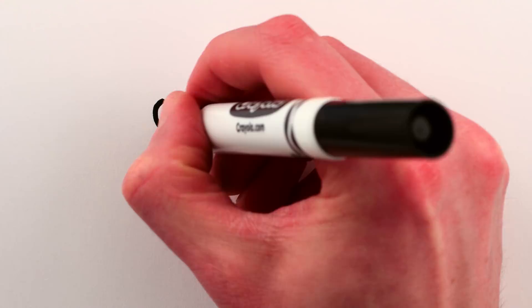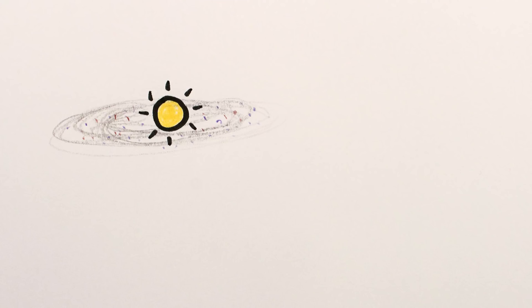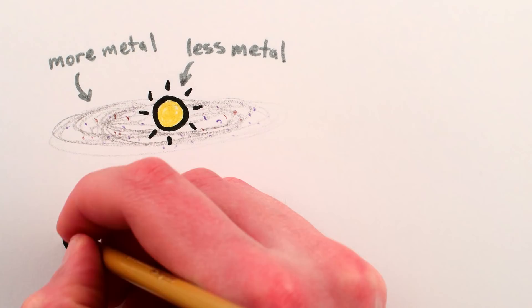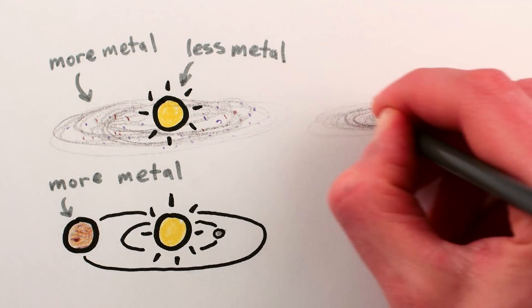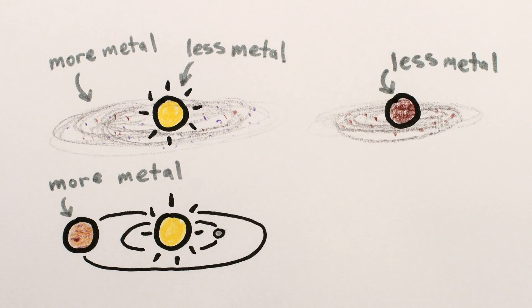3. Metallicity. The dust and gas left over from star formation has higher concentrations of metal, so the atmospheres of giant gas planets have elevated levels of metal. Brown dwarfs, on the other hand, have around the same amount of metal as stars.